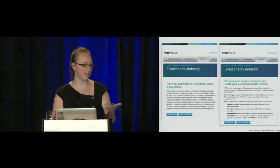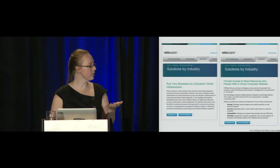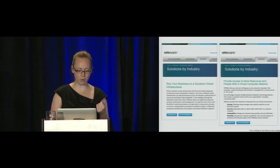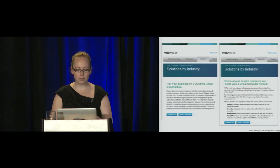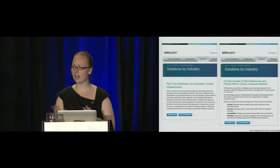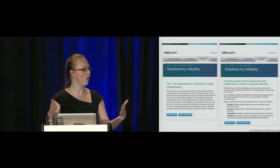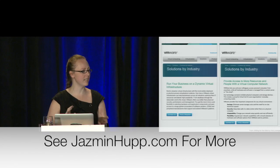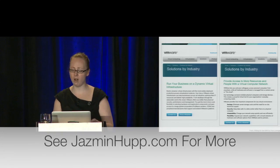Here's an example of a rewrite the Norman Nielsen Group did. They started with: 'Solutions by industry — run your business on a dynamic virtual infrastructure.' I don't know what that means. They rewrote it as: 'Provide access to more resources and people with a virtual computer network,' and bullet-pointed it. There's a lot of science and theory around how to write for the web. We don't have time for a whole section on it, but I wanted to give you a taste of one thing you can do to make your writing more accessible and easier to read online.